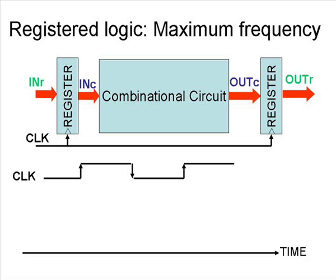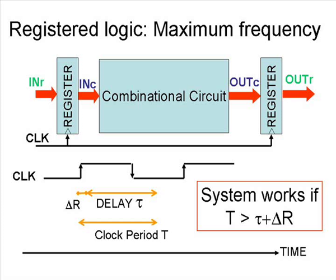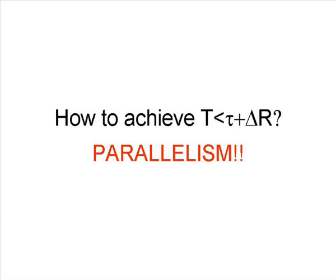If we compare the clock signal period with the delay of the combinational circuit, the system works if the period is higher than the sum of all the delays. This addition sets up a bound for the maximum value of the clock frequency. This limit can be broken by using parallelism.